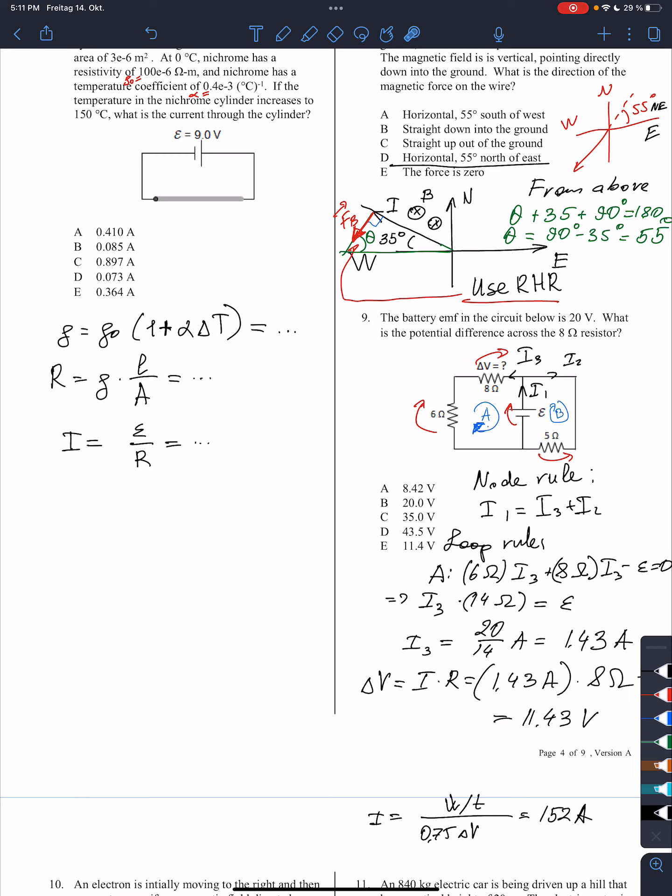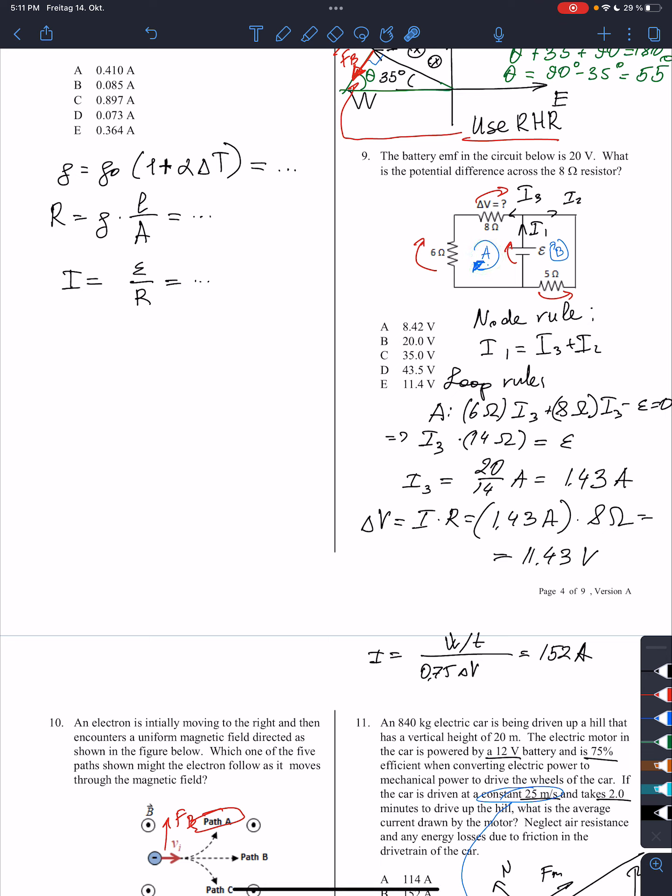Next, the loop rule. So let me start from the loop A. I will start going around the circle. So let me start from this resistor. The direction of the potential difference is the same as how I go around the loop. And therefore it gives me positive contribution and 6 ohms times the current. And this current is I3. Next, I go through this resistor. It gives me 8 ohms times I3.